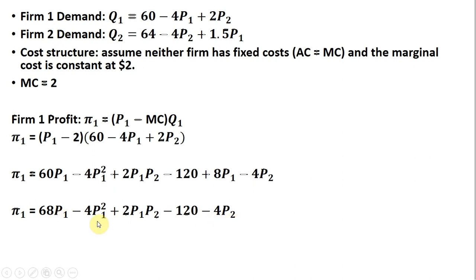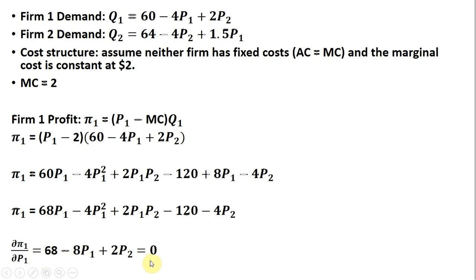Now the all-important step of taking a derivative. We're going to take the partial derivative of firm one's profit function with respect to its price, P subscript one. We get this result. Since we're interested in maximizing profits, we're going to set the derivative equal to zero. So 68P subscript one becomes 68, and the partial derivative of minus 4P subscript one squared — bring down the 2 in front — and we get this.